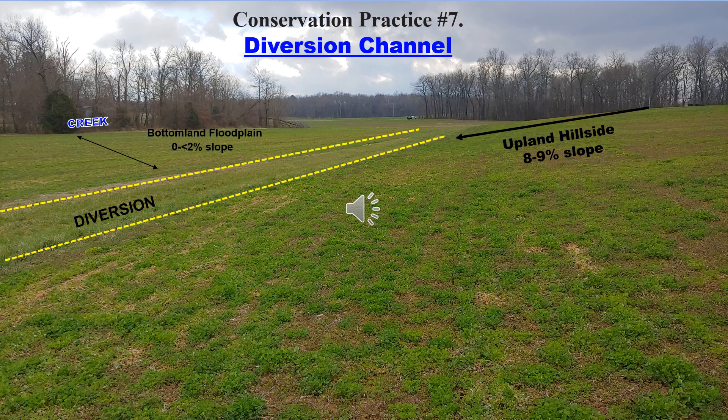The difference is that in land judging competition, a diversion is needed only when the site you are judging is a bottomland or floodplain site that has higher elevation sloping ground above it. The purpose of the diversion is to capture runoff from the sloping land and divert it away from the bottomland or floodplain area, thus keeping the productive bottomland soil from eroding.